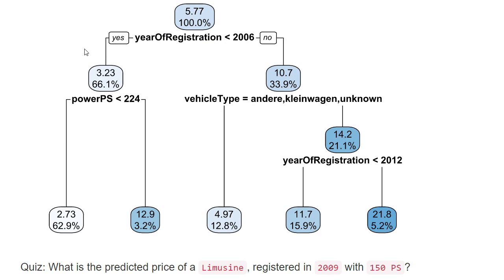If the condition is satisfied — if it's true — we go to the left. If it does not hold true, we continue on the right. Our car was registered in 2009, so this is not smaller than 2006, so we continue on the right — the condition is not satisfied. Here we have another condition: whether the vehicle type is either Andere, Kleinwagen, or unknown.